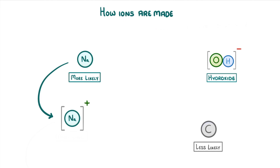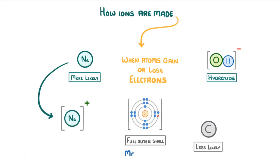As we've seen in our video on electron structure, ions are formed when atoms gain or lose electrons. And they do this in order to have a full outer shell, so that they're more stable.